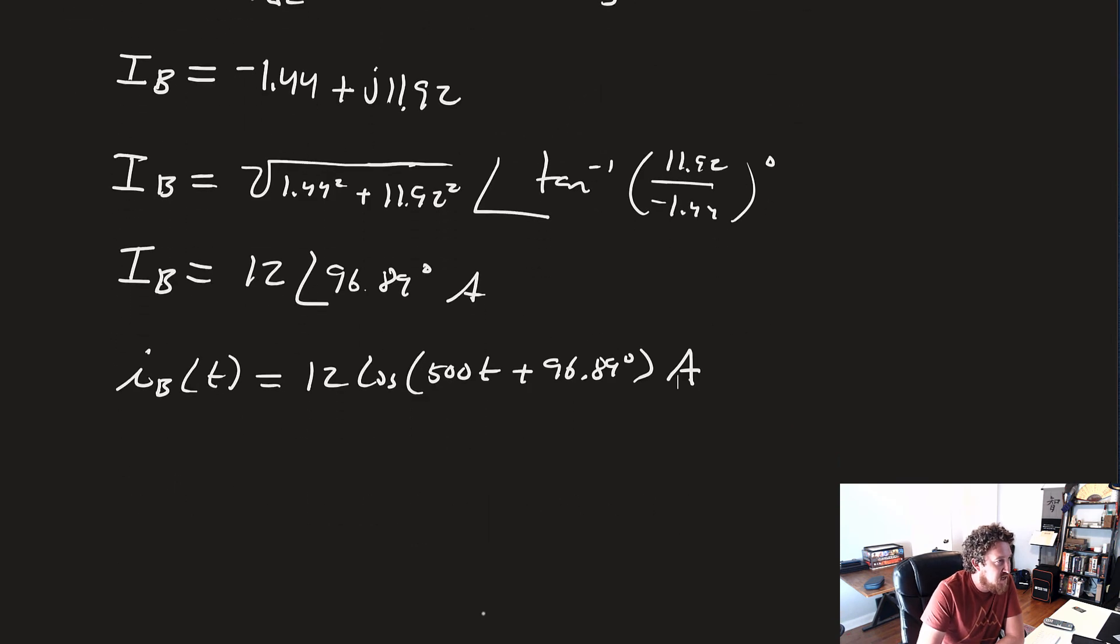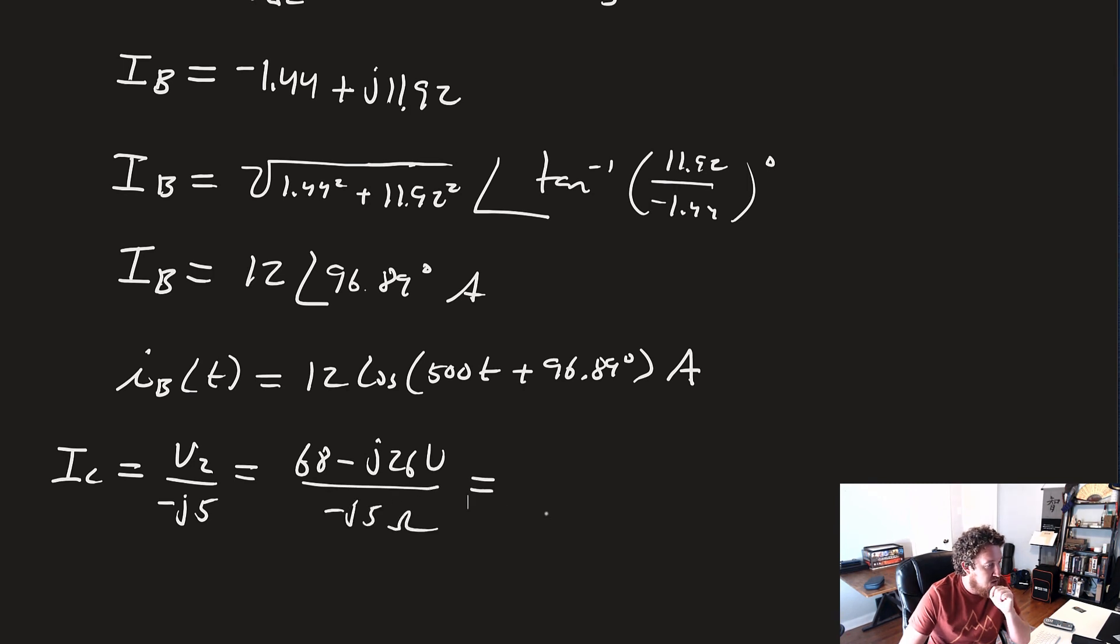Finally, I sub C is the one that drops through that capacitor. So I sub C equals V2 over minus J5, which is 68 minus J26 volts over minus J5 ohms. A little bit of arithmetic and you get 5.2 plus J13.6 amps.